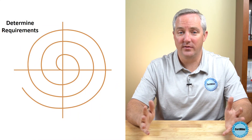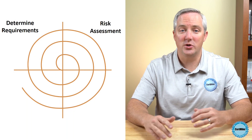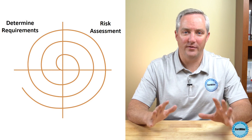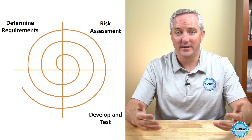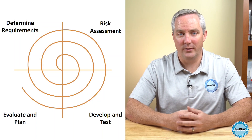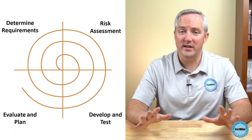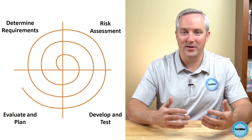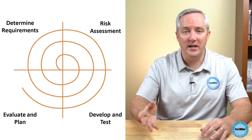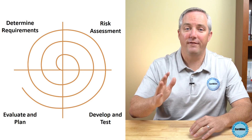In the 1980s, Barry Boehm of TRW introduced the Spiral model, a software development approach designed to mitigate some of the disadvantages associated with the waterfall model. Boehm viewed software development as an iterative process that has four phases: developers determine objectives, alternatives, and constraints; they evaluate alternatives and identify and resolve risks; they develop and test the product; and then they begin the planning phase for future development work. The major difference from waterfall is that developers move through these phases in an iterative, spiral fashion — multiple times until they have a satisfactory finished product.